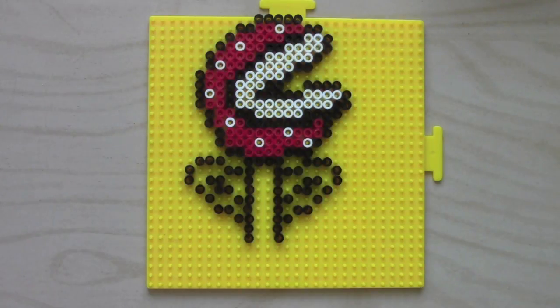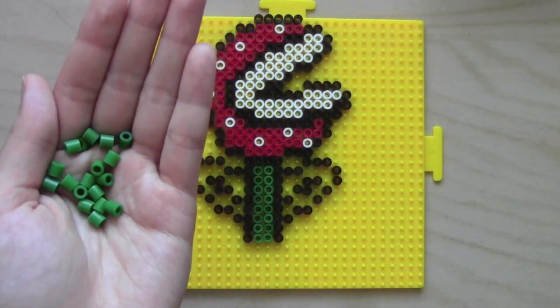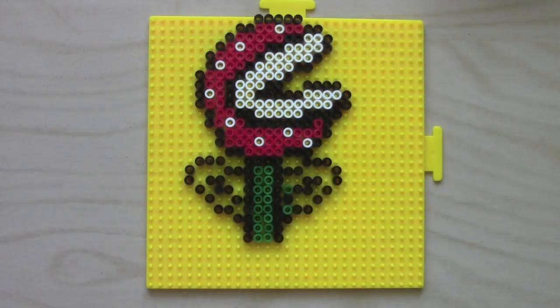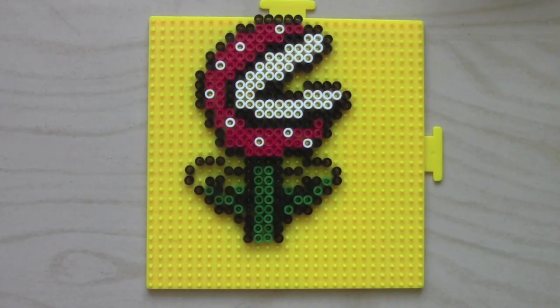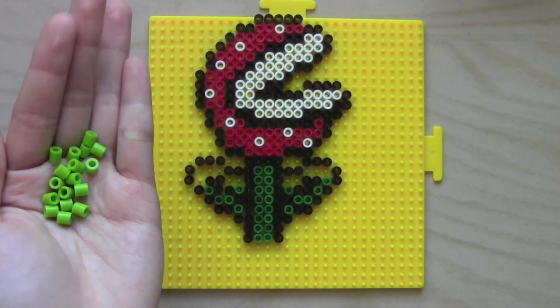Now that the head's done, you need to get your green perler beads out and fill in the stem. Fill in the bottom leaf with these dark green beads. The top part of the leaf will use this lime colored perler bead.